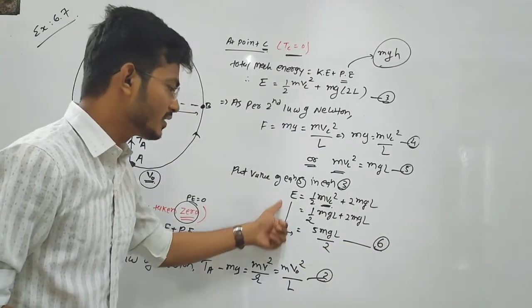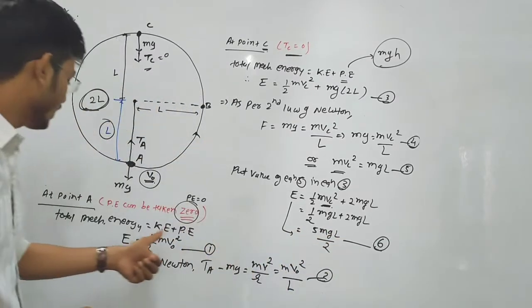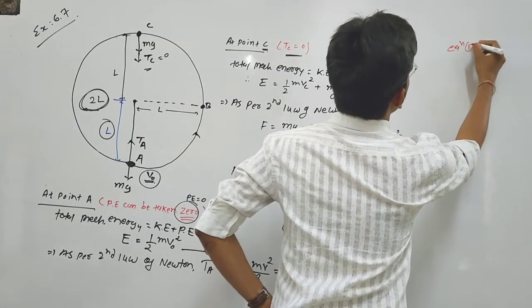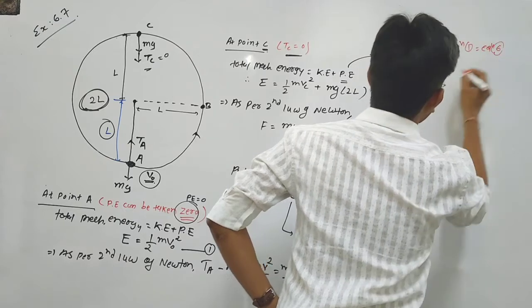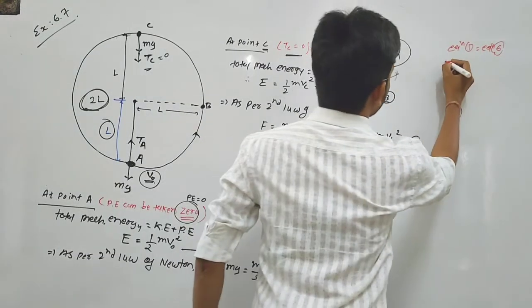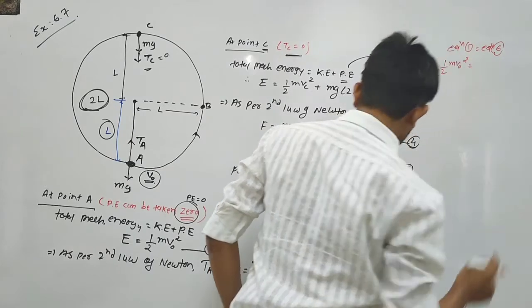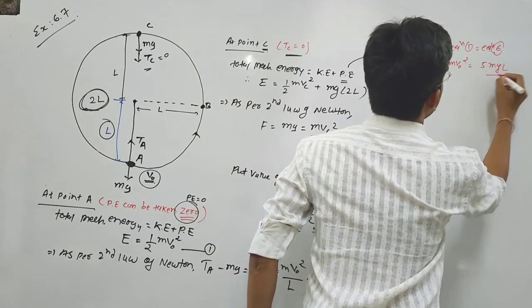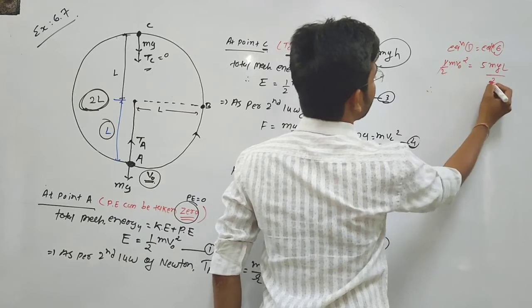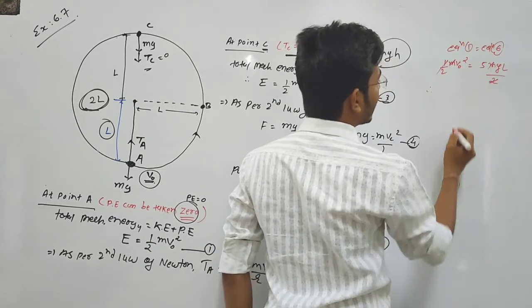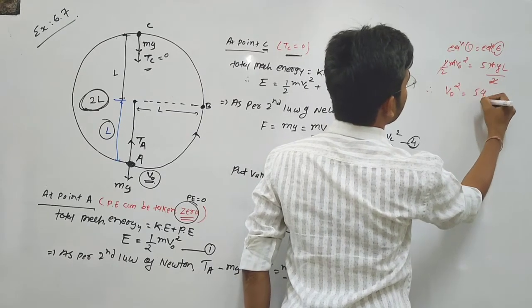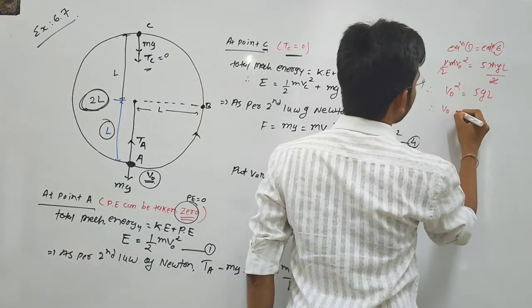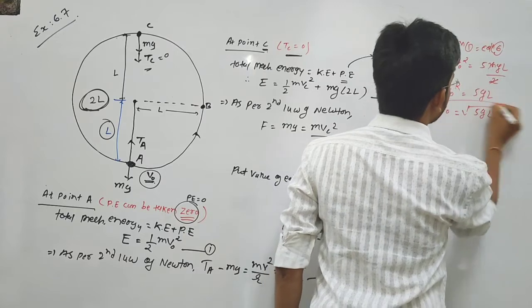We compare equation 1 (total energy at A) with equation 6. Setting equation 1 equal to equation 6: half m V0² equals 5mgL divided by 2. Solving for V0, we get V0 equals the square root of 5gL. This is our answer to part one.